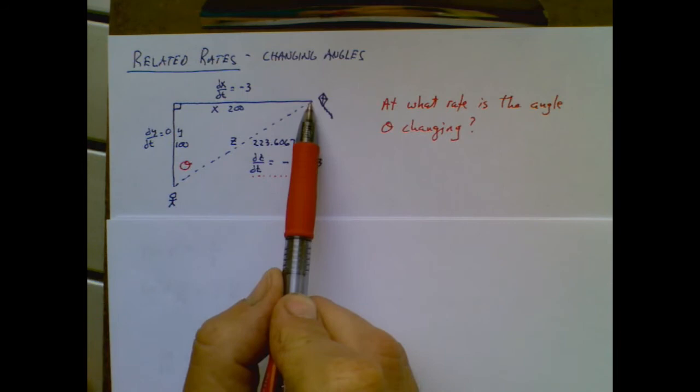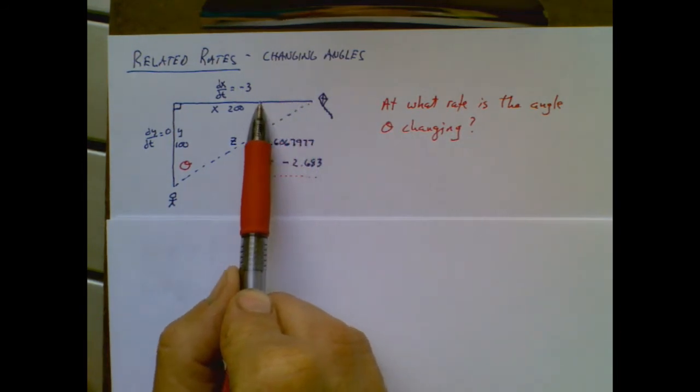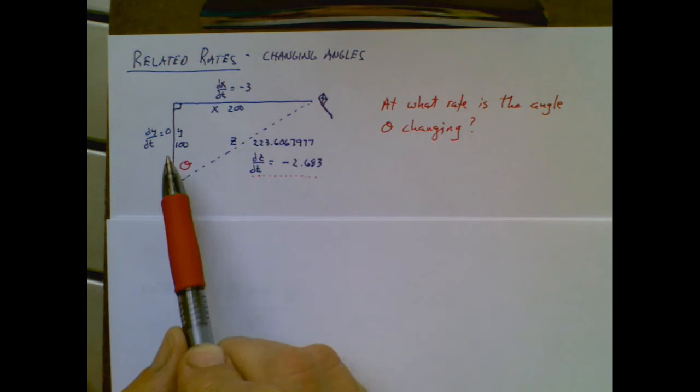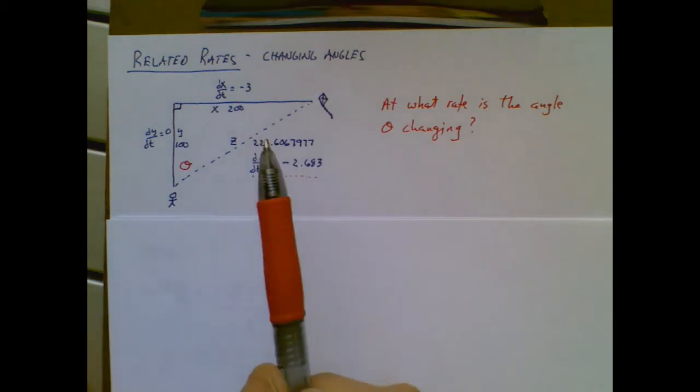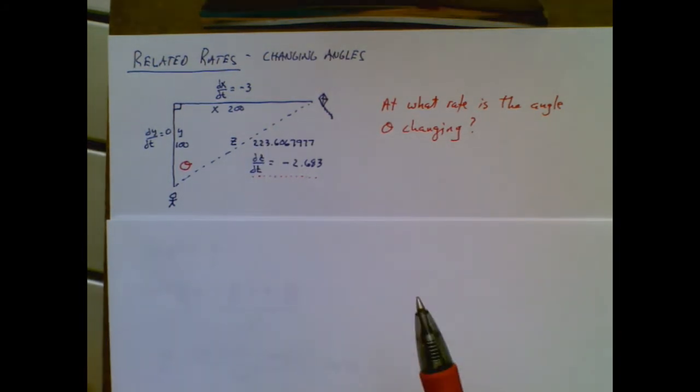And now let's think of this. As that kite is being wound closer this way, is that angle getting bigger or smaller? And the answer is that angle should be getting smaller. And so when we get to the final answer, we should have a negative. If we don't have a negative, we know there's a problem.